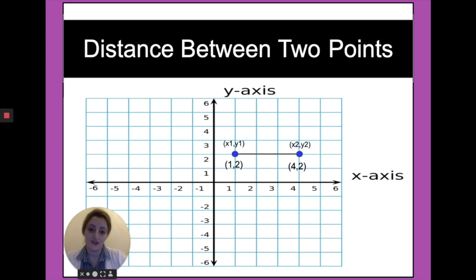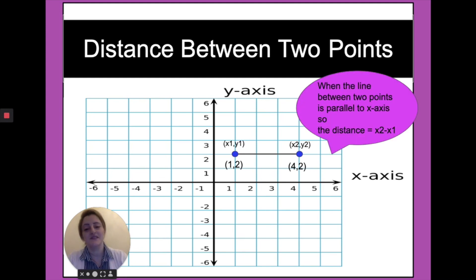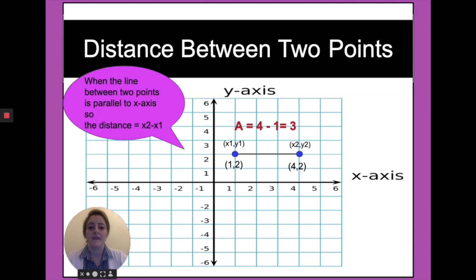The distance between these two points is along the line where y1 equals y2, and x1 and x2 are different. The distance between these two points equals x2 minus x1. If we name it a, so a equals 4 minus 1, and it's equal to 3.